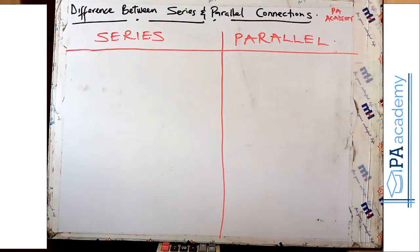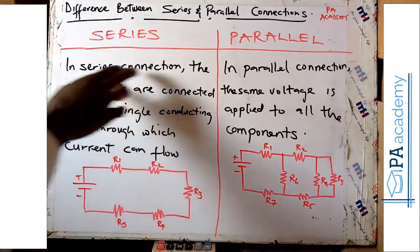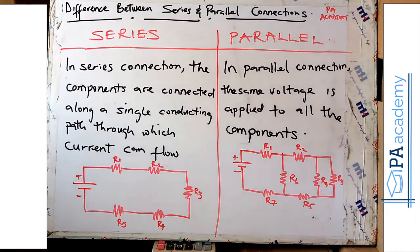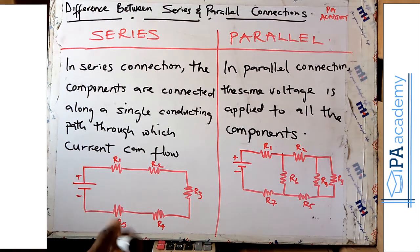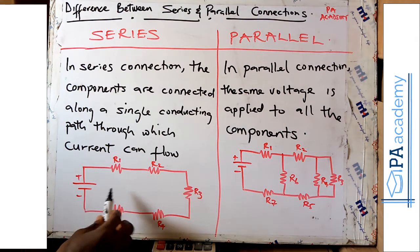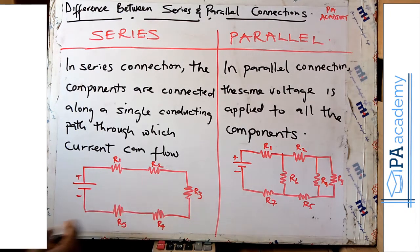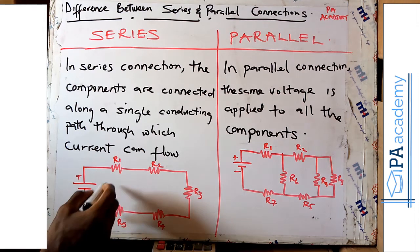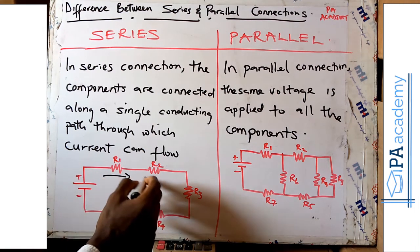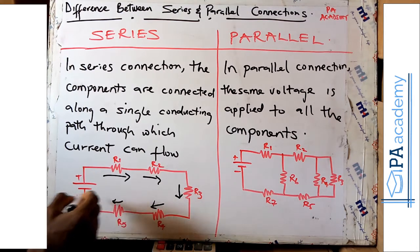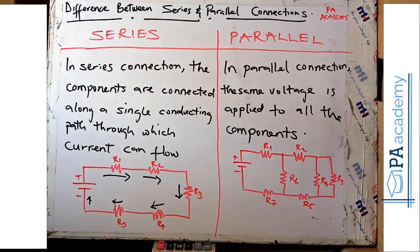The first thing we're looking at is what we mean by a series and a parallel connection. In a series connection, the components are connected along a single conducting path through which current flows. Looking at the diagram for a series connection, you can see there is just one path through which the current will flow.